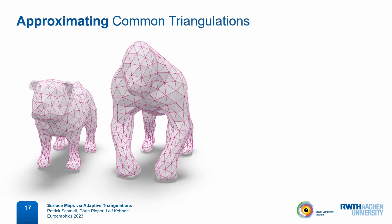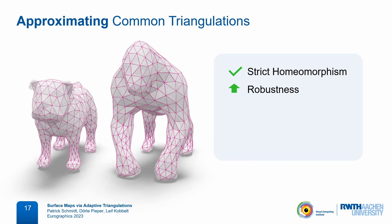Our approach is to use common triangulations that only approximate the input surfaces instead of representing them exactly. In addition, we also maintain a bijection to the original surfaces, and that allows us to still produce strict homeomorphisms. Compared to overlay-based methods, this improves robustness because we have full control over element quality, increases performance because we can now work on coarse resolutions, and also leads to slightly simpler algorithms.